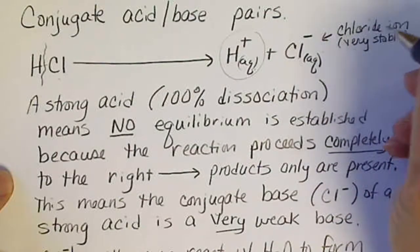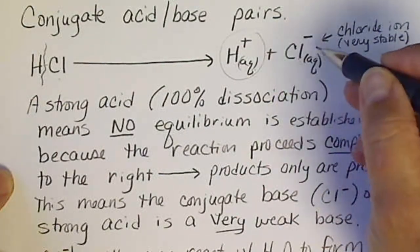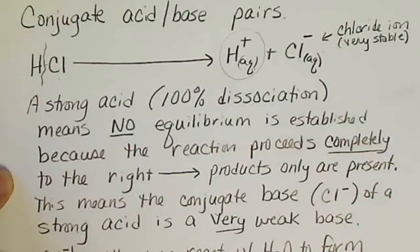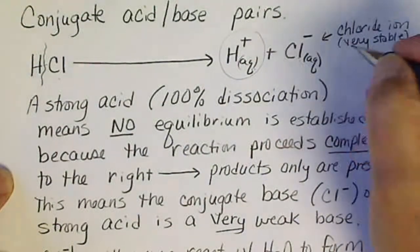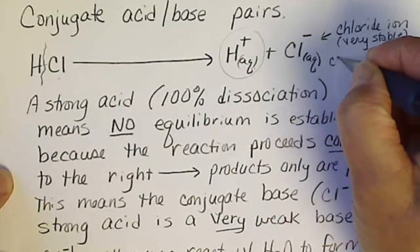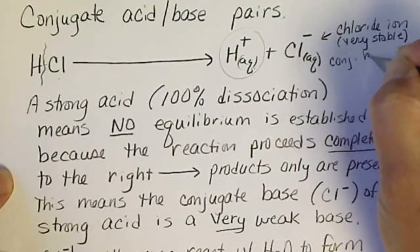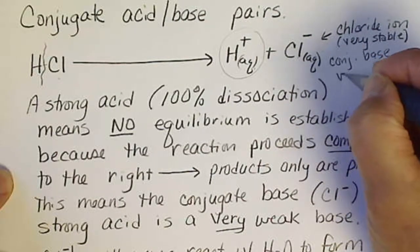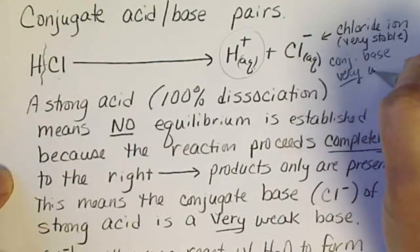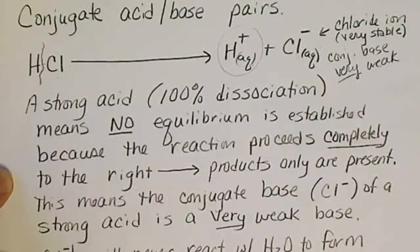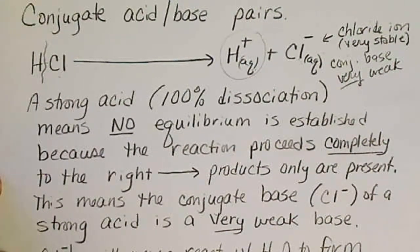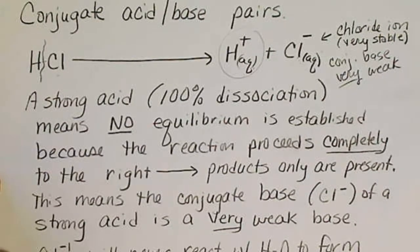Because the chloride ion is so stable, this reaction does not proceed in the reverse direction. So the conjugate base of a strong acid is very weak — and very weak means it's not going to act like a base when it's in solution.